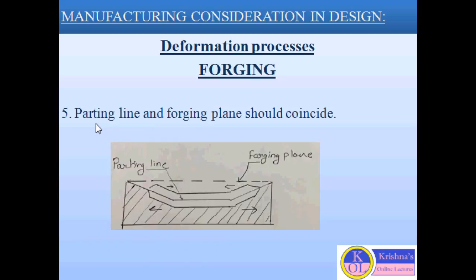Another consideration is that the parting line and forging plane should coincide. As you can see in this diagram, this is the forged part and before the forging process starts, this is the parting line for the forged part. The dotted line shows the forging plane. So these two — the parting line and the forging plane — should coincide before forging starts.